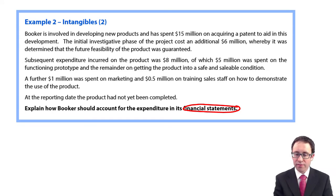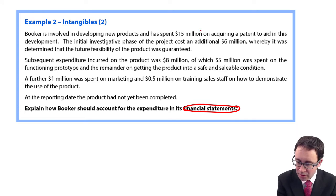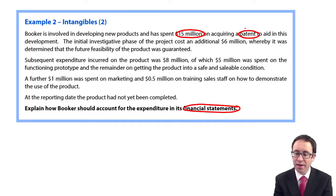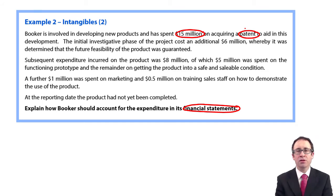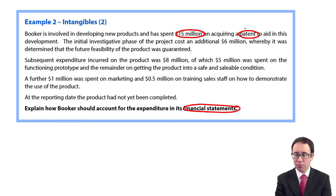It says that Booker is involved in developing new products and has spent $15 million on acquiring a patent. That $15 million on a patent is going to be capitalized. We're going to capitalize the $15 million and then amortize that over its useful life, whatever that may be. We do not know what its useful life actually is, but there'll be $15 million that will be capitalized.